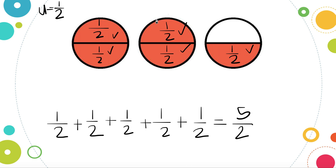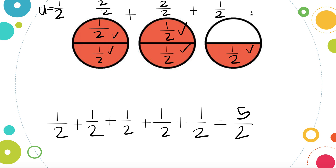In my class, we like to take a shortcut and label how much is shaded in with each whole. So here there are two-halves shaded in on our first one, plus two more halves shaded in on our second one, and only one-half shaded in on the last whole. That also gives us our improper fraction: two-halves plus two-halves plus one-half equals five-halves.